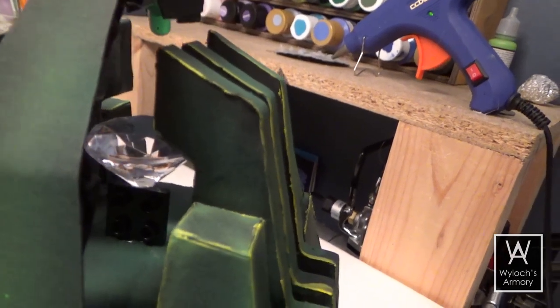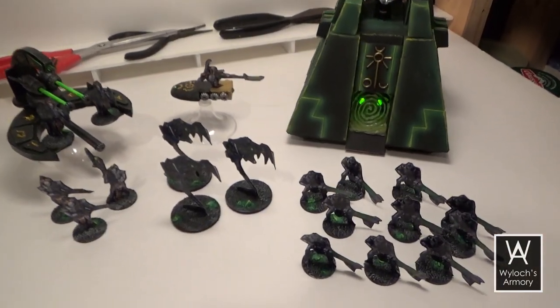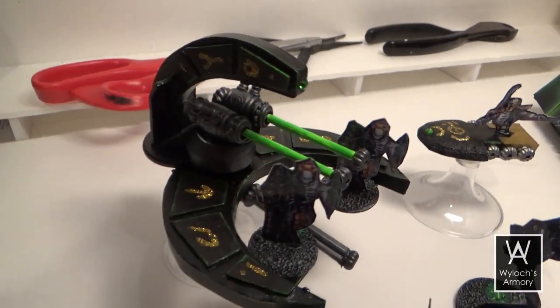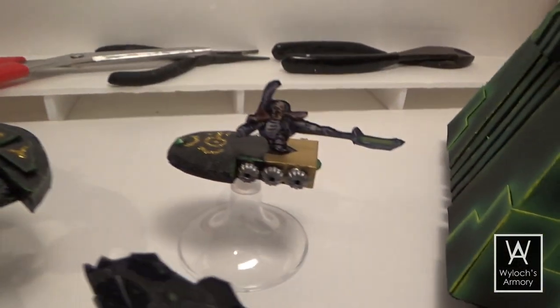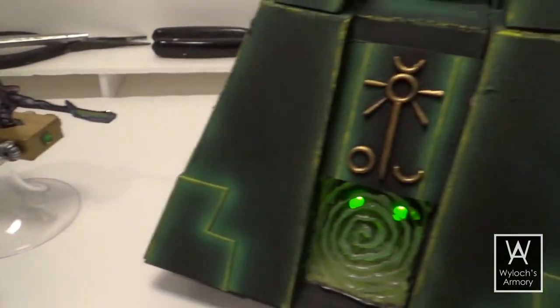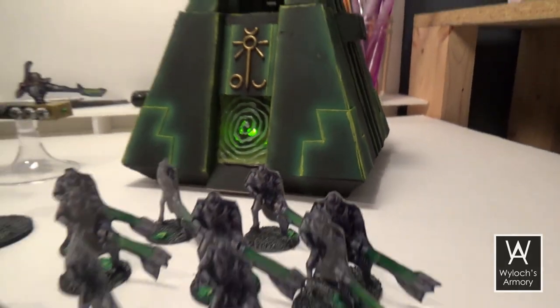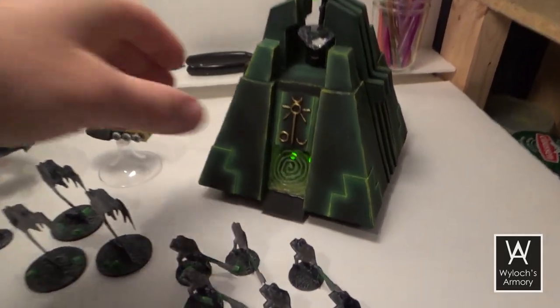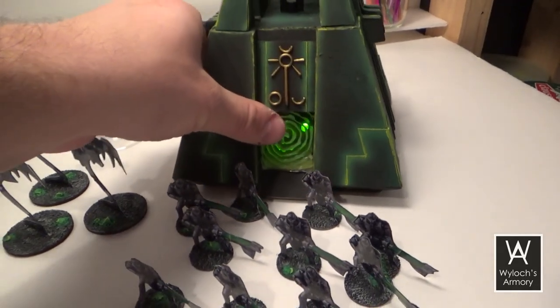And here it is in my army of Necrons, including the annihilation barge we did back in episode 55. I wish there was a way I could have made the portal surface a little foggier so that it would throw more light. Right now it's see-through and you can see the two lights and it doesn't really glow, although in the dark it's not so bad.